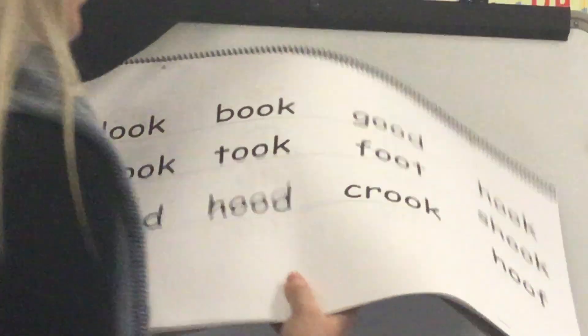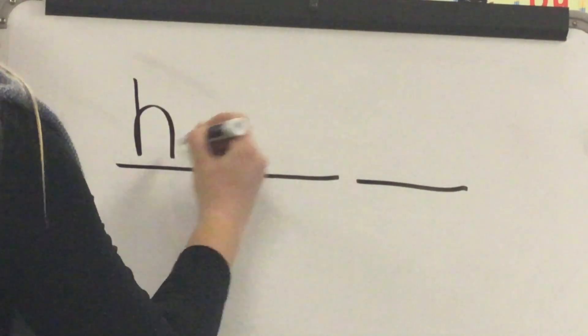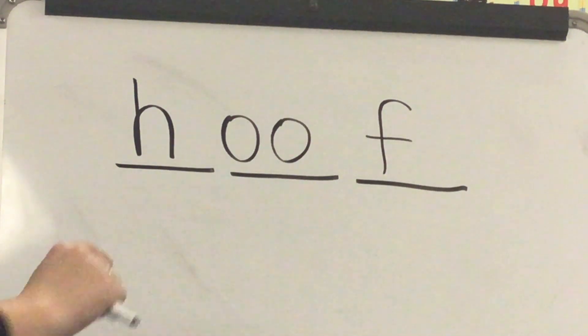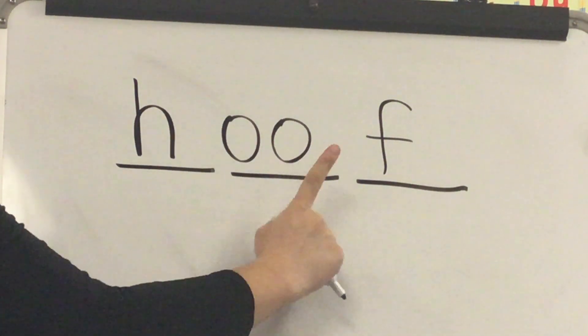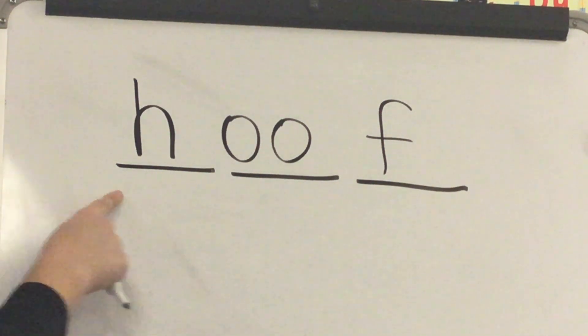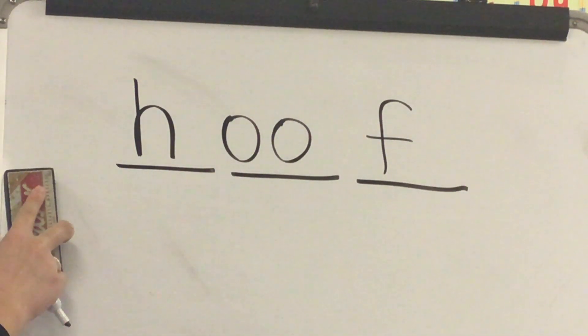Let's stretch and spell some words. Our first word is hoof. What word? Hoof. Stretch hoof: H-/uh/-F. Stretch hoof again: H-/uh/-F. Write the sound spellings you hear in hoof. Check. Spell hoof: H-O-O-F. Word: hoof. Yes, hoof. Hoof is what you might find on an animal's foot, like a horse or a pig.